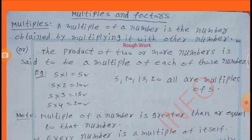Example: Multiples of 5. In the 5 times table — 5×1 is 5, 5×2 is 10, 5×3 is 15, 5×4 is 20. So 5, 10, 15, 20 are the multiples of 5.